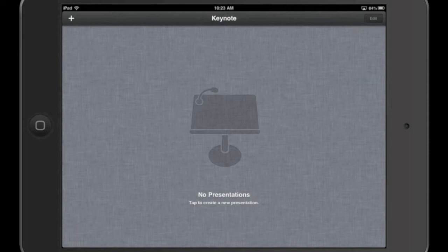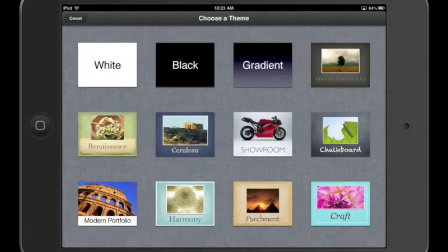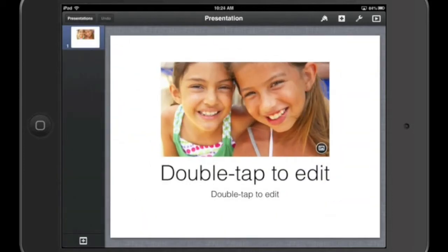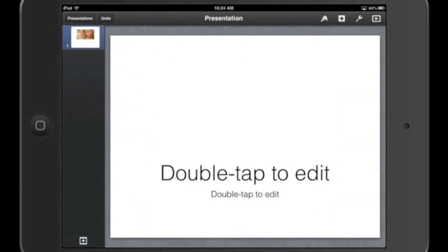I have Keynote launched, and I'm going to begin by tapping to create a new presentation. I'm just going to select the white theme. While I get rid of some of these place markers here, let me just tell you what the activity is.